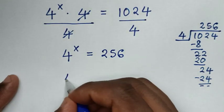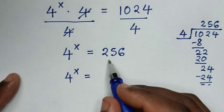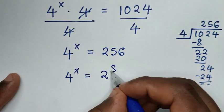Then it will be 4^x equals 256, which is the same as 2^8.